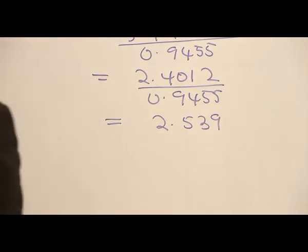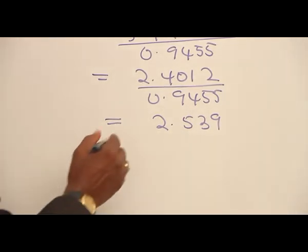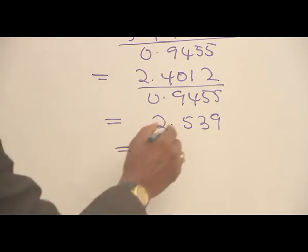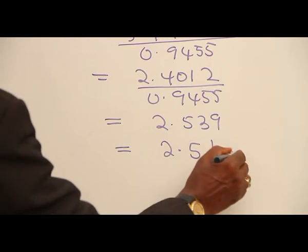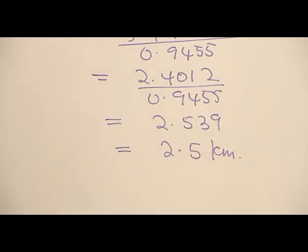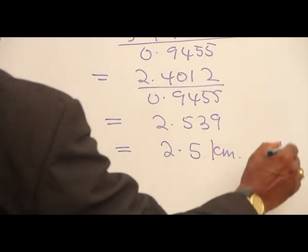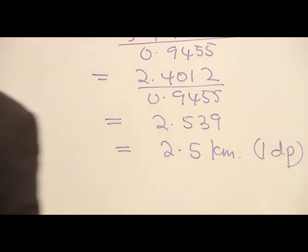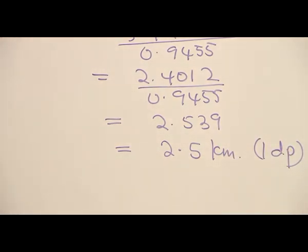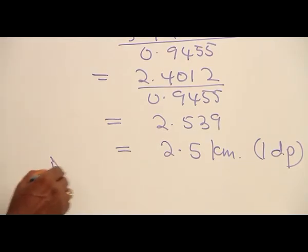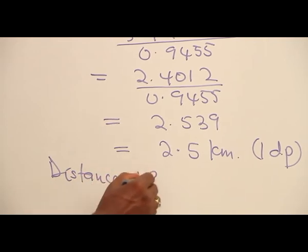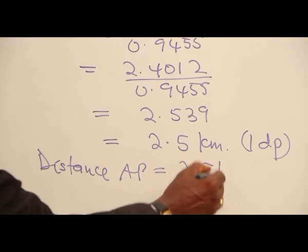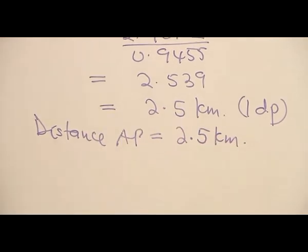2.539, and we will correct this to 1 decimal place, to give us 2.5 kilometers. So the distance from A to P, the distance AP, is equal to 2.5 kilometers.